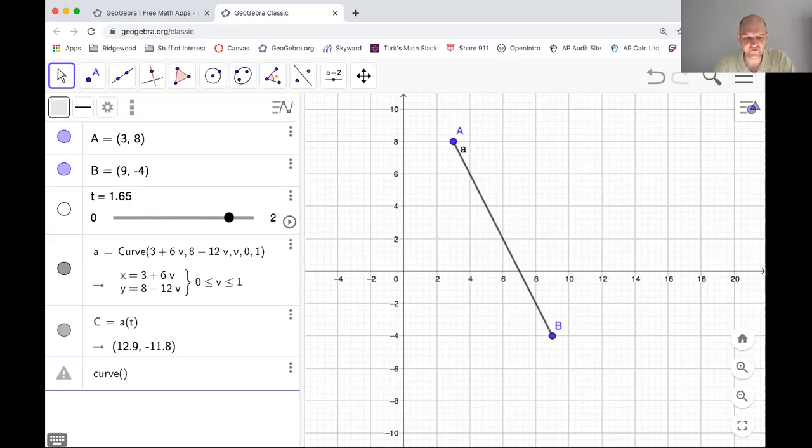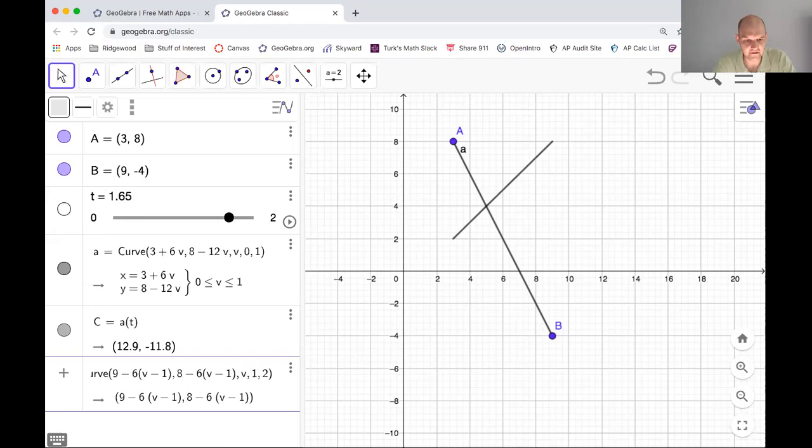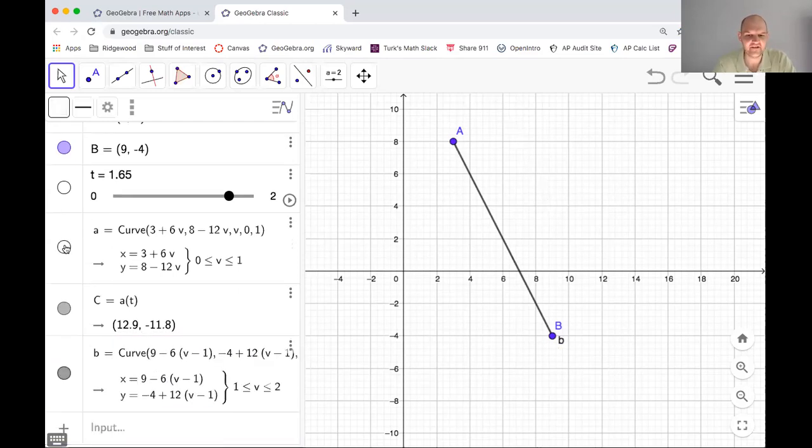So let's do our second curve, which we're saying is 9 minus 6, the quantity V minus 1, comma, 8 minus 6, the quantity V minus 1. V is the parameter. And we want to go from 1 to 2. Okay. So this is a failure. Why is this? Oh, why did I use 8? Negative 4. Holy cow. Plus 12. Okay. So this is still a failure. All right. That went poorly. So this is our second curve. It's doing it.